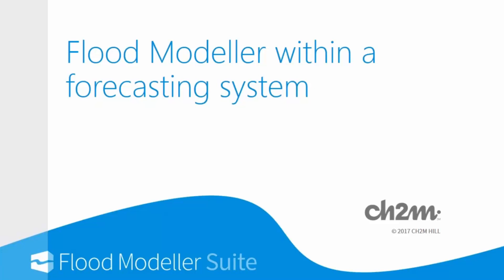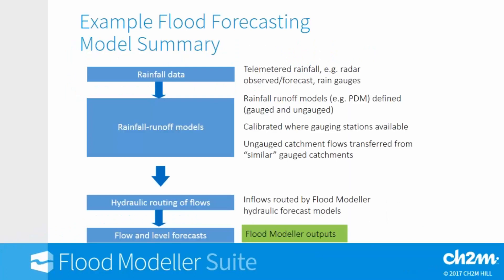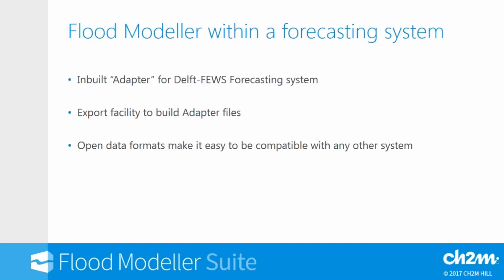How Flood Modeler fits within a forecasting system: we start with rainfall data - either observed data from telemetry or forecast rainfall - run it through a rainfall runoff model such as a PDM model to generate an outflow, which is then used as the boundary condition for our Flood Modeler flood forecasting model. Flood Modeler routes the flows downstream, calculates water levels and flows at specific points, and returns the flow and level forecast back to the flood forecast system, which then informs the user whether they need to issue a warning or operate a gate.